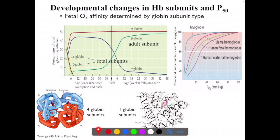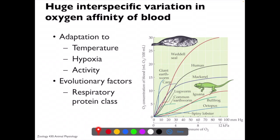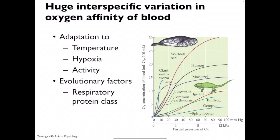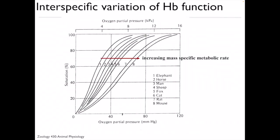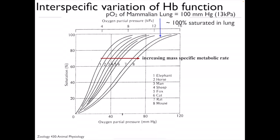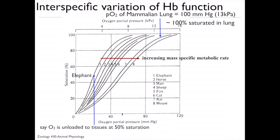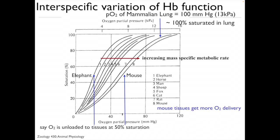Fetal subunits are eta and gamma, whereas adult hemoglobin subunits are alpha and beta. Different animals have very different oxygen affinity relationships, with adaptations to temperature, hypoxia, activity, or various respiratory pigment types. There's also a trend with mass — although basically all mammals have 100% saturation in the lung, how much affinity they have really varies. For instance, the mouse tissues get more oxygen delivery to support their higher mass-specific metabolic rate.